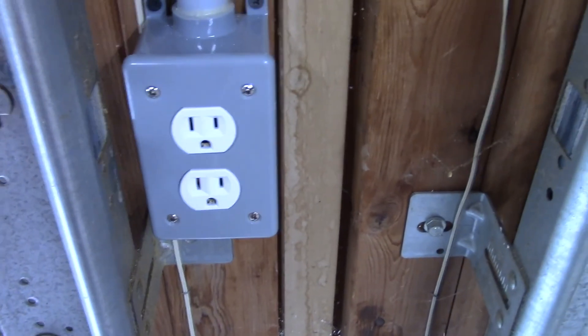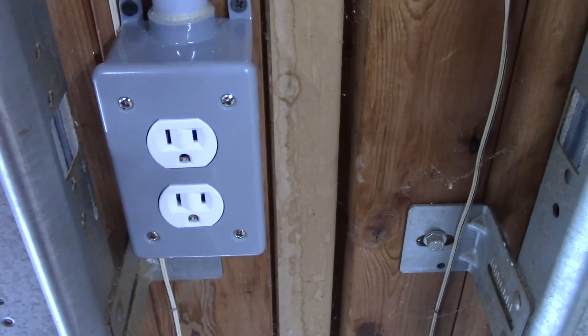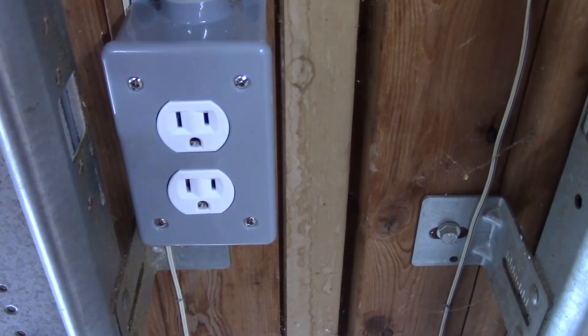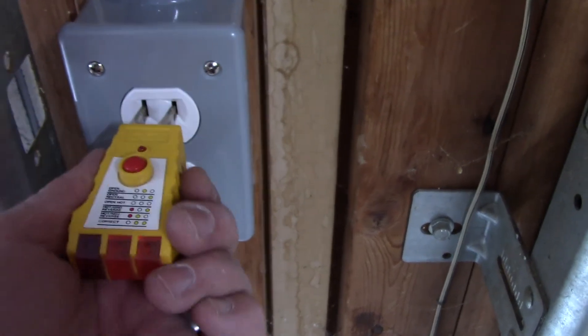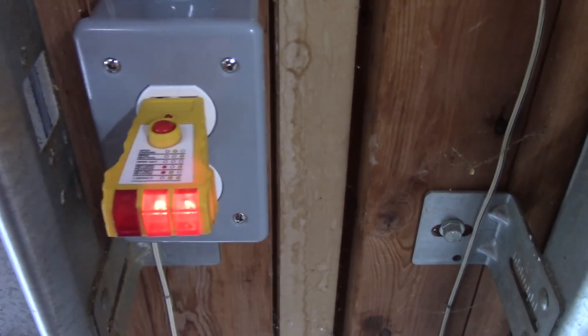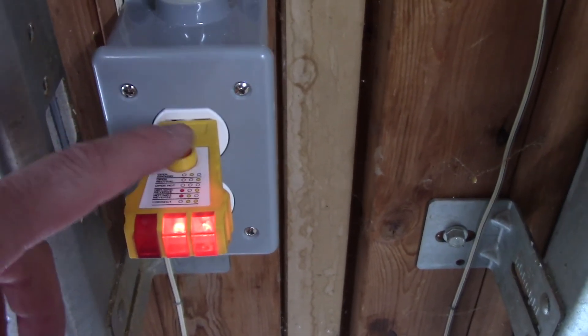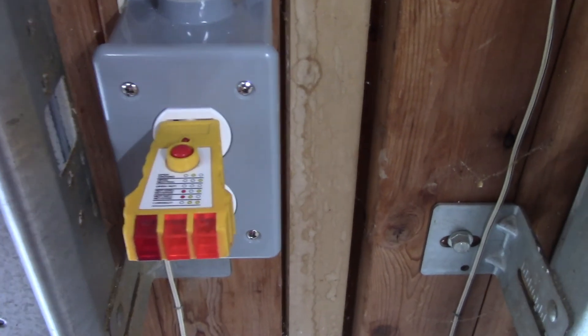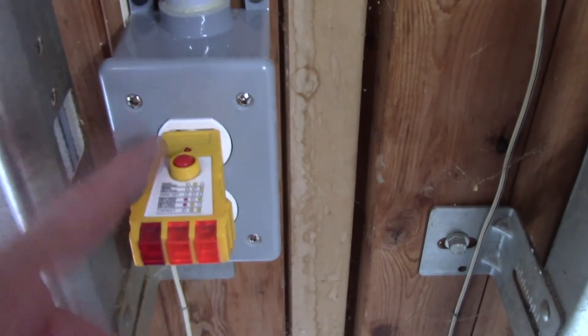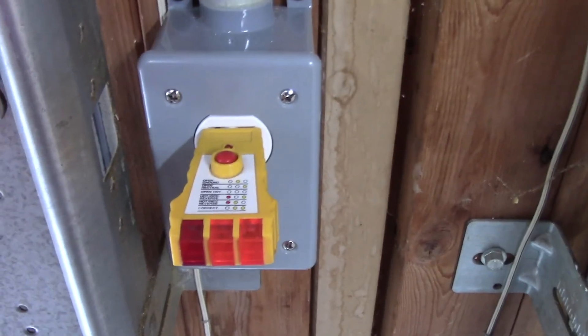This outlet here is wired downstream or on the load side of that GFCI outlet I put in. So if I put the tester in here, I have the two orange lights. And if I hit the button, it trips the GFCI. So this outlet in the garage is also protected from that GFCI.